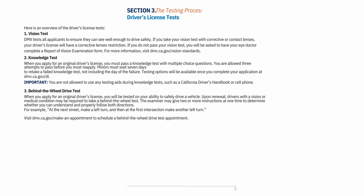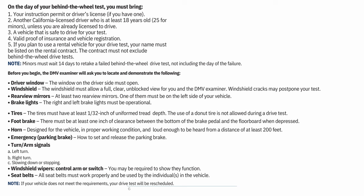On the day of your behind-the-wheel test, you must bring: 1. Your instruction permit or driver's license (if you have one). 2. Another California licensed driver who is at least 18 years old (25 for minors), unless you are already licensed. 3. A vehicle that is safe to drive. 4. Valid proof of insurance and vehicle registration. 5. If using a rental vehicle, your name must be listed on the rental contract, and the contract must not exclude behind-the-wheel drive tests.